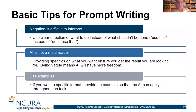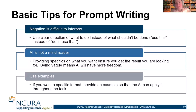Basic tips for prompt writing: the first one is very counterintuitive, but negation is difficult for AI to interpret. If you say things like 'don't do this,' the AI may actually do exactly the thing you don't want. I know of a person who tried to make images in MidJourney and kept saying 'don't include airplanes,' and after about 10 times the AI every single time kept including airplanes. They were trying to make a historical picture from before airplanes were invented, so it was very upsetting.